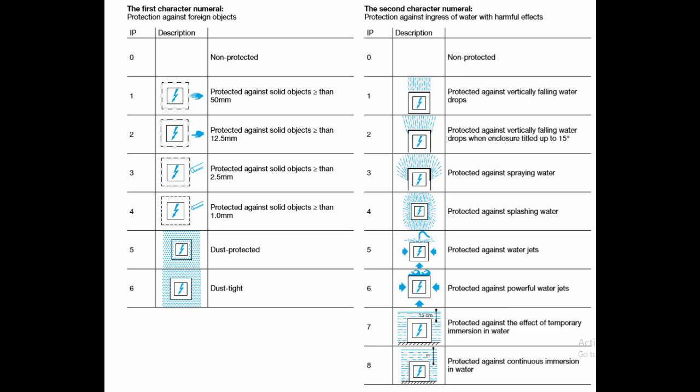If it is 1 for the first term, it is protected for solid objects greater than 50mm. If it is 2, solid objects greater than or equal to 12.5mm. If it is 3, solid objects greater than or equal to 2.5mm. If it is 4, greater than or equal to 1mm. If it is 5, it is dust protected. If it is 6, it is dust tight.